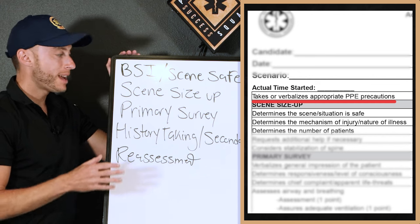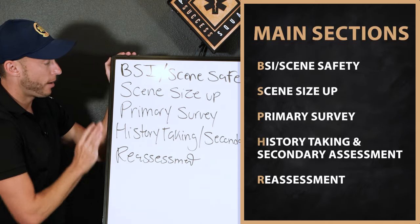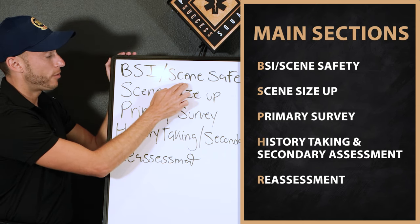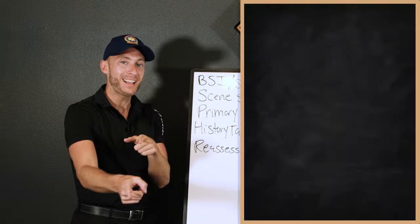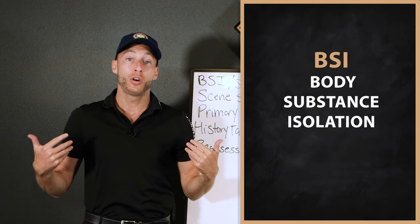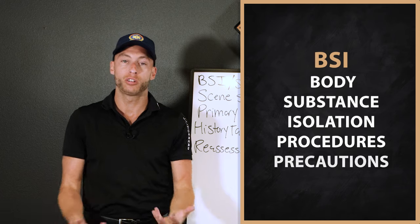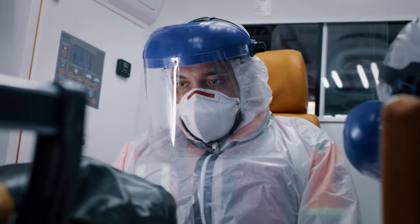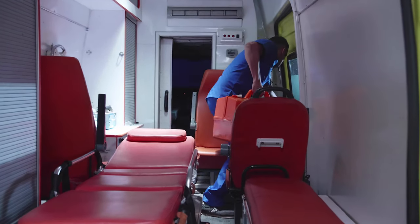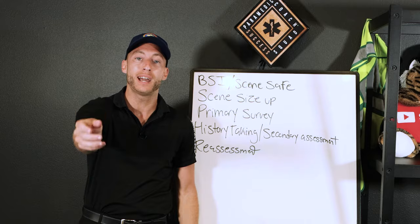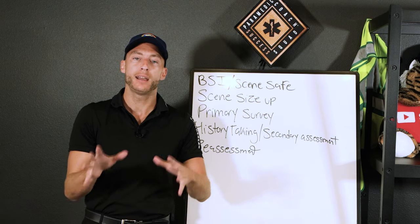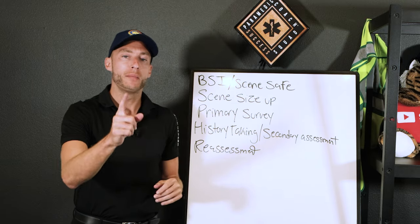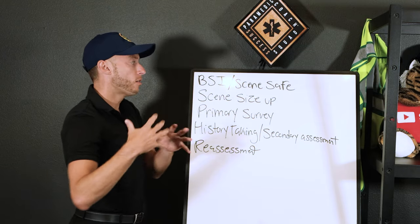BSI Scene Safe is the first thing we do in this station. We have five main sections. BSI — body substance isolation procedures — we want to wear gloves, a mask, a gown if we need it. You'll know what to do based on the dispatch information. We want to say: my BSI is on, is the scene safe? Am I able to clear? Yes — BSI and the scene is safe.